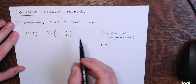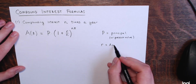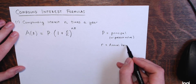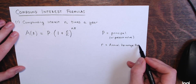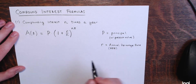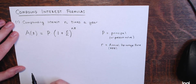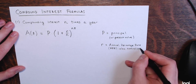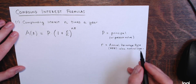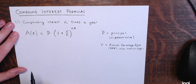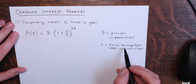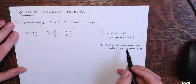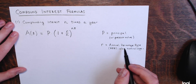R is the annual percentage rate, otherwise known as APR — you might have heard that word with credit cards. This is also called the nominal rate. Don't write this as a percentage though; write it as a decimal. So if the APR was 5%, you're not going to write 5 for R — you're going to write 0.05. N, the lowercase n, is the number of compounding periods in a year — the number of times interest gets added in a year.